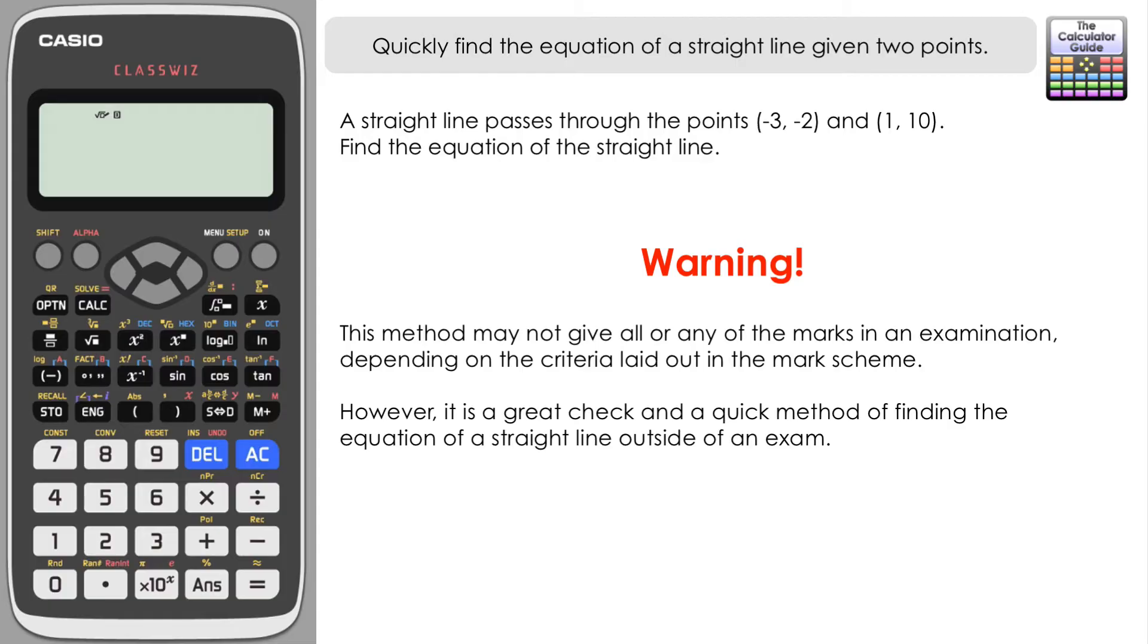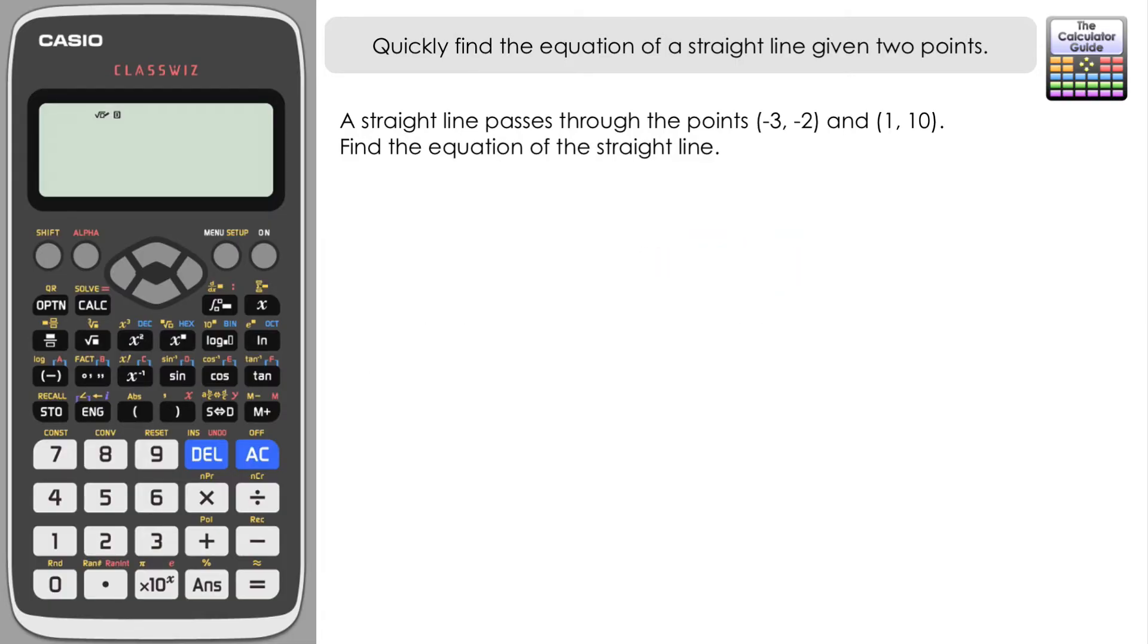So let's consider this: a straight line passes through the points (-3, -2) and (1, 10). Remember, all we need to find a straight line are two points that are on that line.